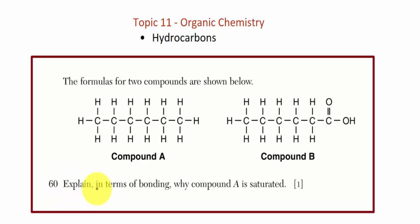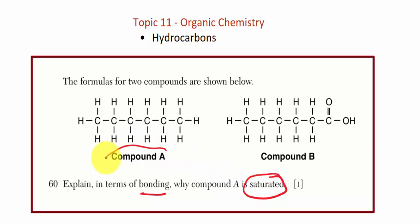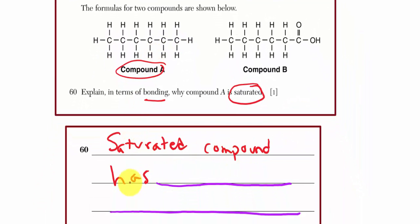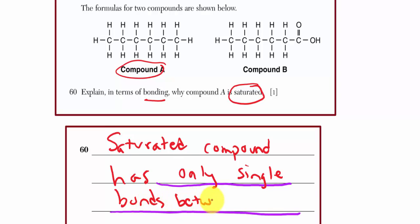Question 60: Explain in terms of bonding why compound A is saturated. Saturated compounds in organic chemistry are compounds where carbon atoms are connected to each other by single bonds only — no double bonds, no triple bonds, no multiple bonds at all. In compound A, all carbons are represented with single bonds between them. A saturated compound has only single bonds between carbons.